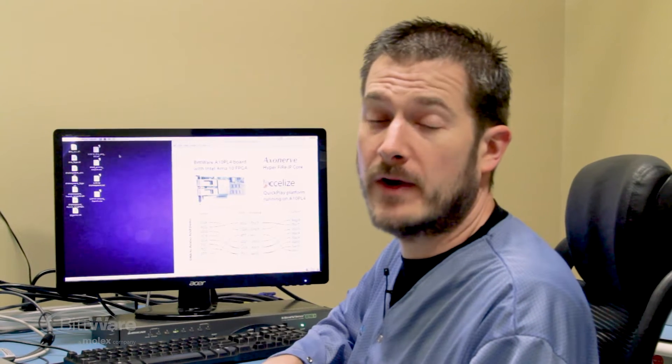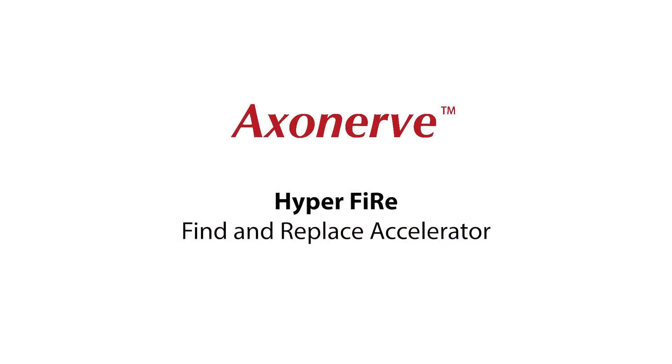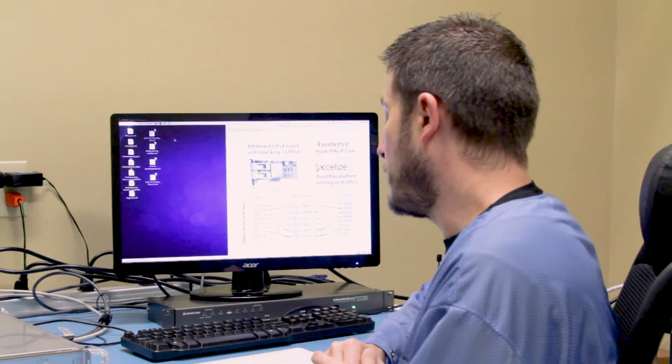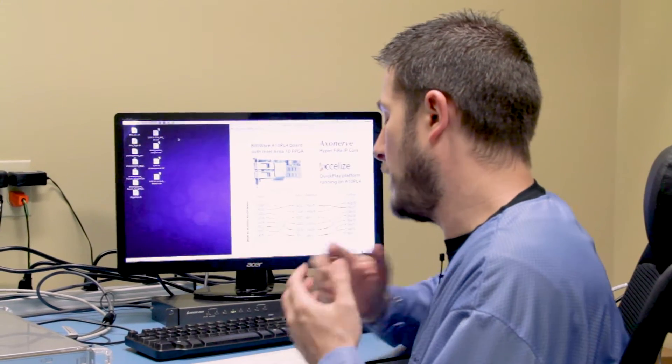So let me just take a minute to explain the application that we're going to be running in this demo. So this is a find-and-replace accelerator called Hyperfire, and it's part of a search IP core called Axonerve from the company Nagase. Now, normally with an IP core, you'd be responsible for bringing your own FPGA development to make it work.